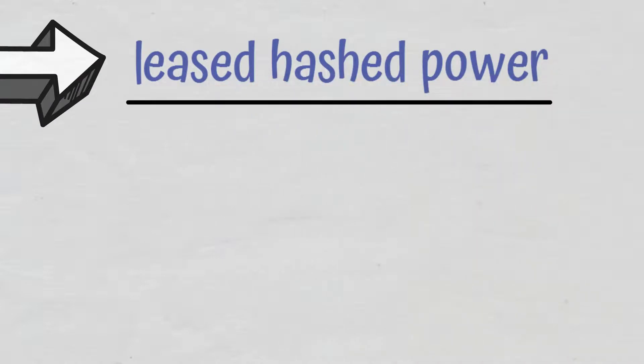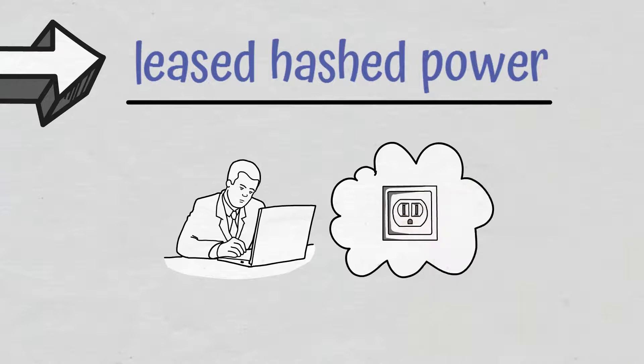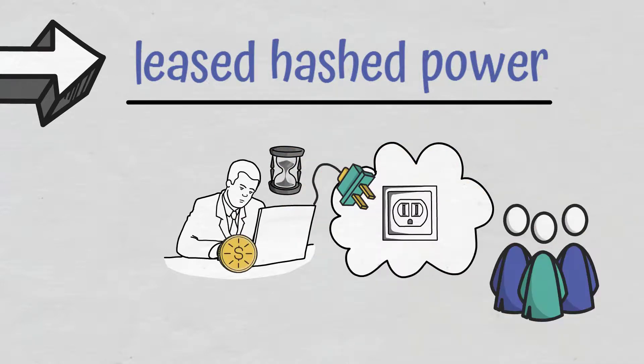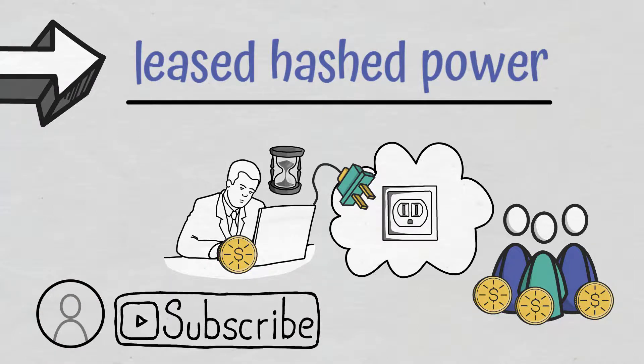Leased hash power. In this case, customers rent hash rate or computing power from a mining farm for a certain amount of time. The farm's revenue generated from crypto mining is then shared among users based on the share of the hash power they control. The entire process is simple as the customer has to open an account with a cloud mining company and subscribe to a plan.